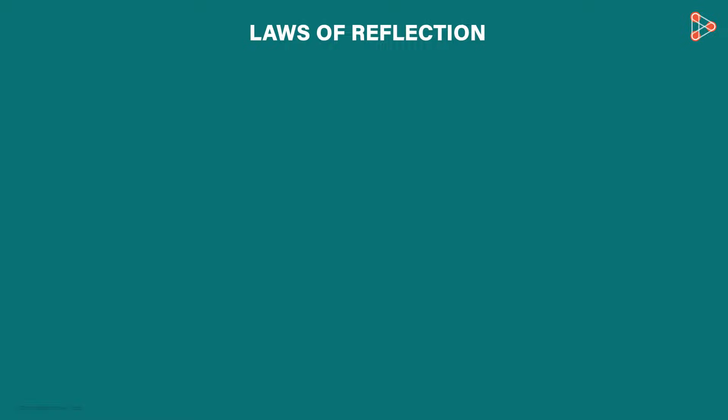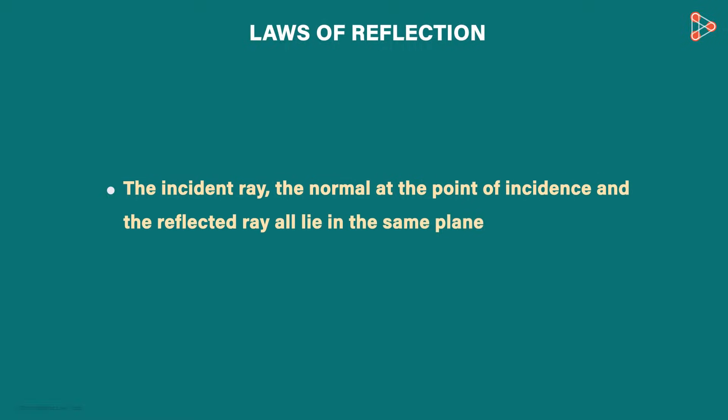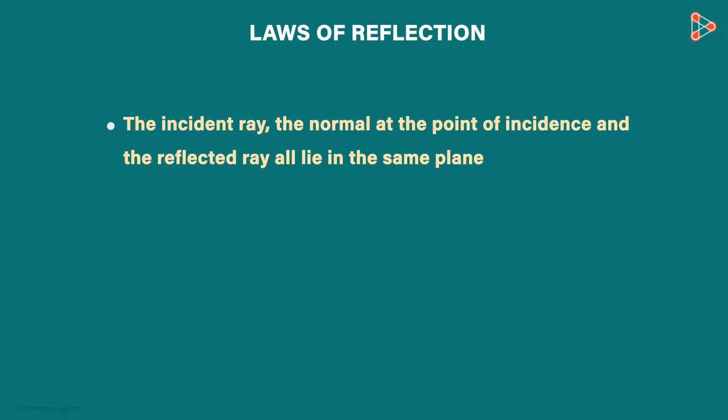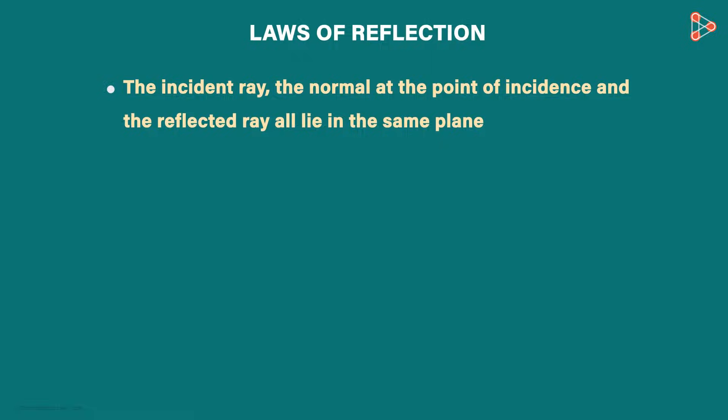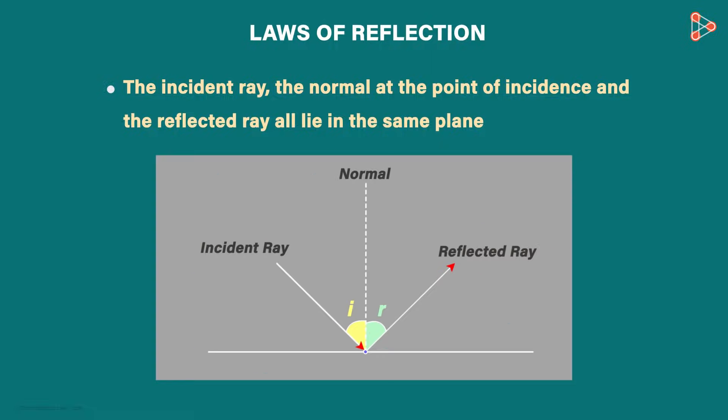The second one tells us that the incident ray, reflected ray, and normal all lie in the same plane. So if I draw this scenario on a piece of paper, I will get this. Incident ray, reflected ray, and the normal all three are in the plane of the paper. The second law tells us that they will always be on the same plane.